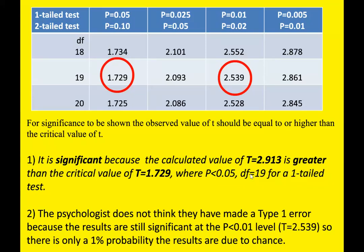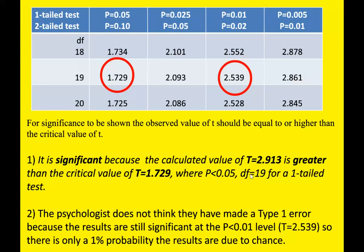Here are the answers. Question 1: it is significant because the calculated value of t = 2.913 is greater than the critical value of t = 1.729, where p < 0.05, df = 19, for a one-tailed test. For question 2: the psychologist does not think they have made a Type 1 error because the results are still significant at the p < 0.01 level — the critical value is t = 2.539, and since the calculated value of 2.913 is greater, there is only a one percent probability the results are due to chance.